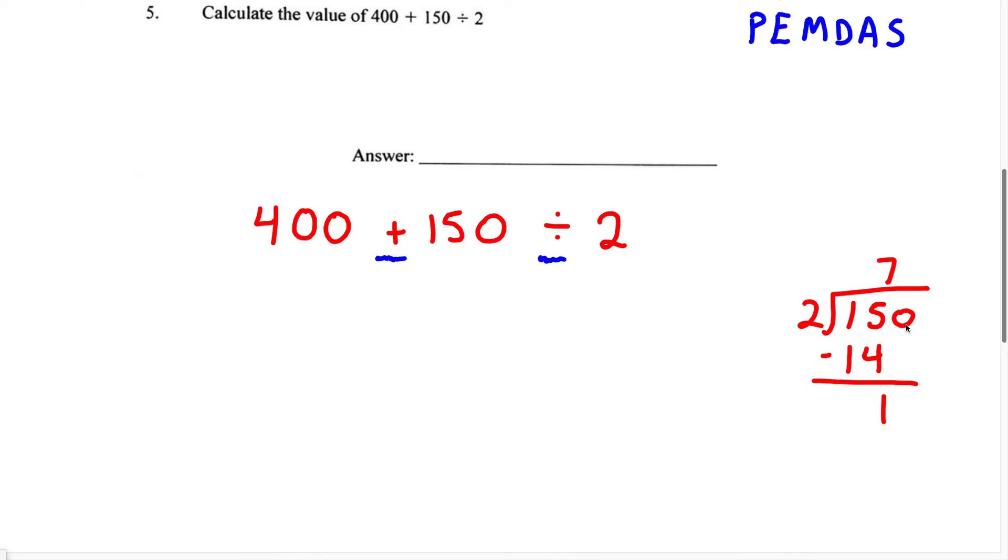Now we're just going to bring down this 0. 2 can go into 10 five times. 2 times 5 is going to give us 10. Now when we subtract this, 0 minus 0 is 0 and 1 minus 1 is also 0.